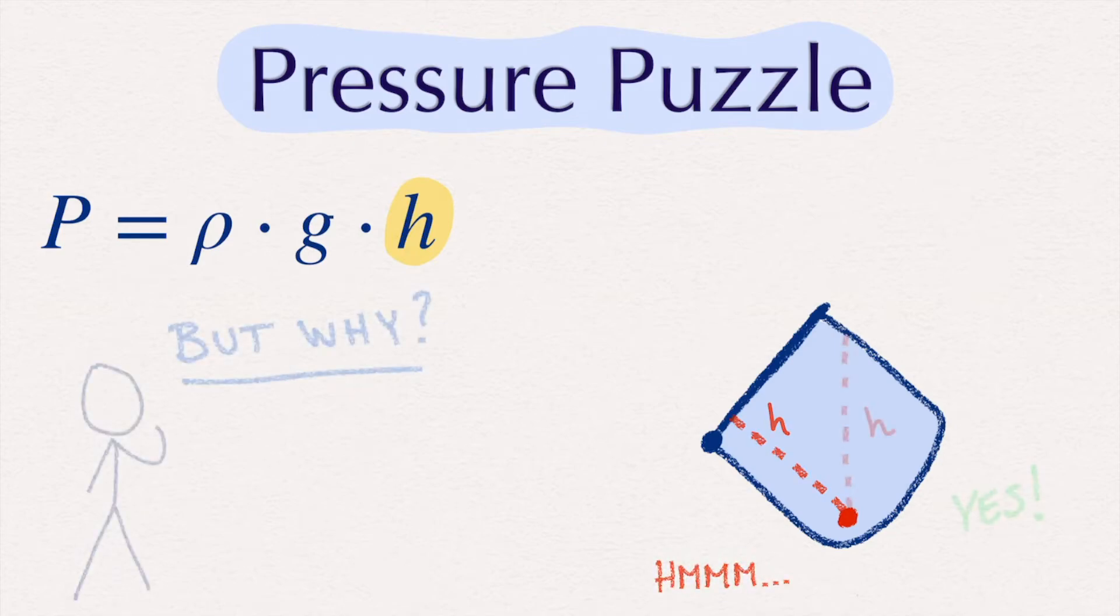Instead, we could take the vertical distance from our point to the boundary of the container. However, this would mean that by simply tilting the container, the pressure at the exact same point will increase, since this vertical distance has increased. And it turns out that this is indeed the case.